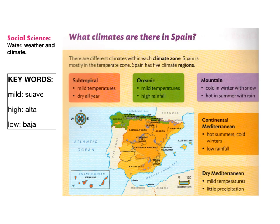In the last video, we saw that the Earth has five different climate zones, and I think all of you remember that Spain was mostly in the temperate zone. Today we're going to see that there are different climates within each climate zone. Spain also has five climate regions. We're going to start from the most different one.